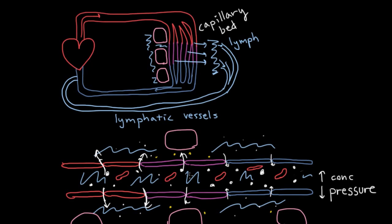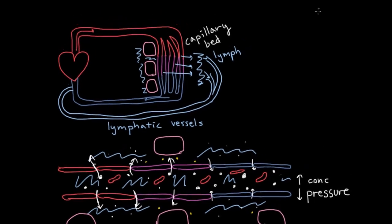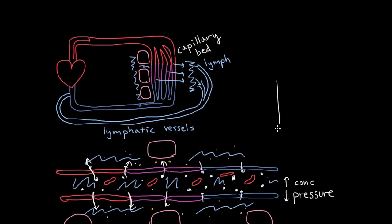So hopefully this gives you a better idea of how lymph is kind of formed from capillaries, how a bunch is squeezed out and only some of it gets back in. So finally, I just wanted to draw a pretty ugly human being and make the point that you pretty much have capillaries all over your body. They're feeding all your muscles, all your different tissues. And for that reason, you need lymph vessels to take lymph away from pretty much all of your body.